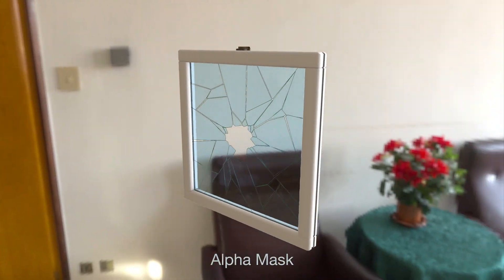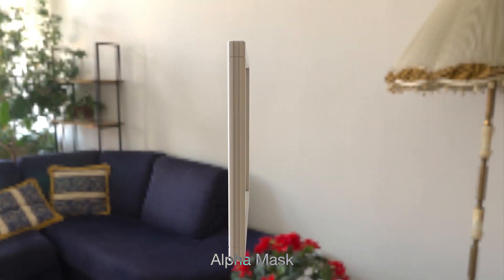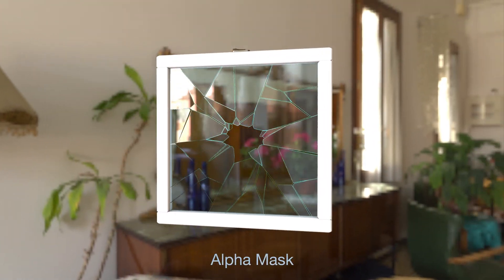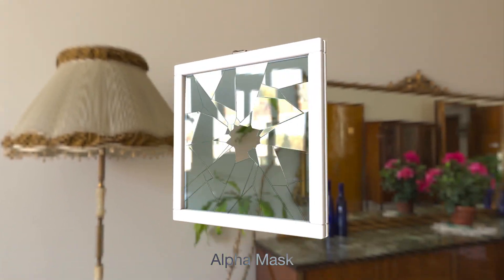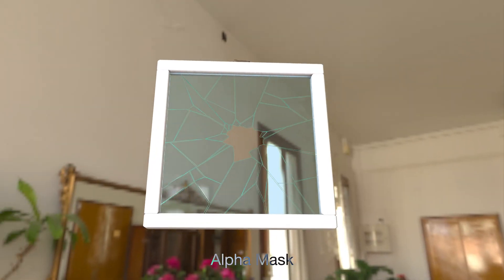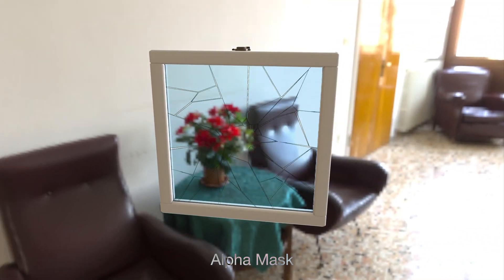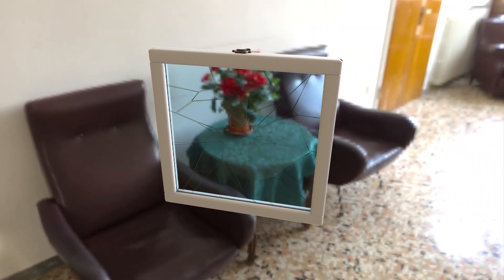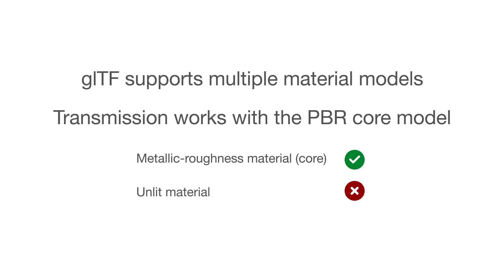Rendering overlapping transparent objects correctly can be computationally expensive in real time. GLTF makes no requirements on the correctness of the rendering, so engines and renderers can choose cheaper alternatives, or fall back to simple alpha blending, whichever is most suitable for the target platform. The transmission extension is compatible with the core PBR material model in GLTF, but it is not compatible with other material models, such as Unlit.